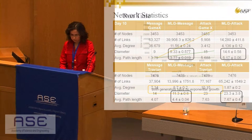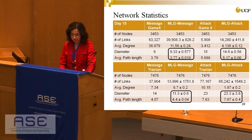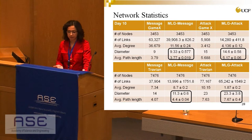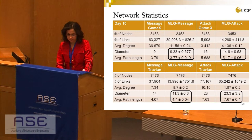For the network statistics of our second generator, we compared with GameX and the Travian dataset, averaging over three runs with standard deviation reported. Our work was able to model the diameter and average path length of the real networks, and the values are almost the same.